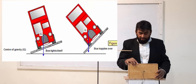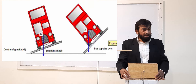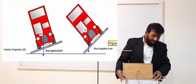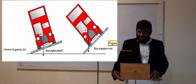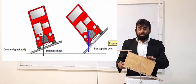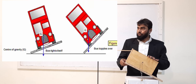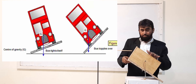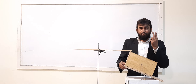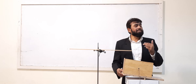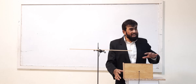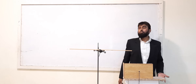When I put the object in this wider orientation, the base is wider so it becomes more stable. I can give it more tilt compared to the previous situation. You can see it is not toppling over on this side because two factors have improved: the height of the center of gravity has decreased and the base has increased, so it has become more stable.